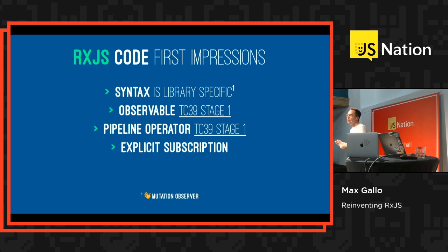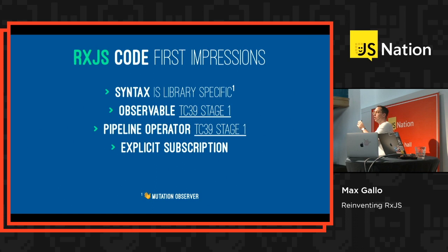Explicit subscription means that you as a developer are writing explicitly that you want to subscribe to something. The `.subscribe()` call is you saying 'I want to react to this thing.' If you know MobX, for example, MobX uses implicit subscription — it works in a different way.